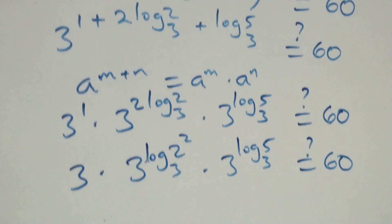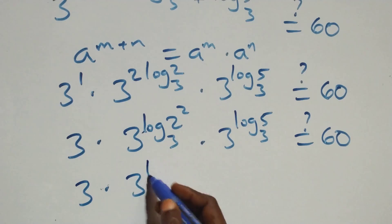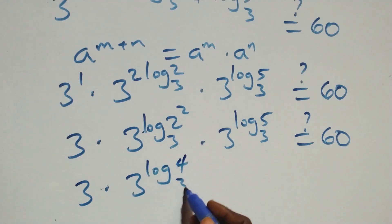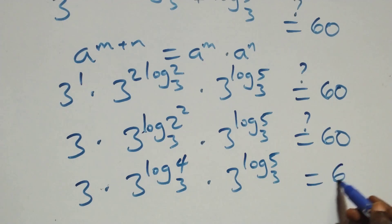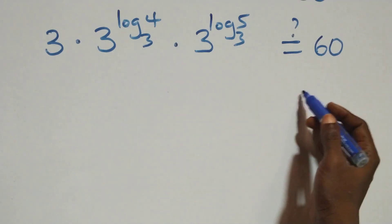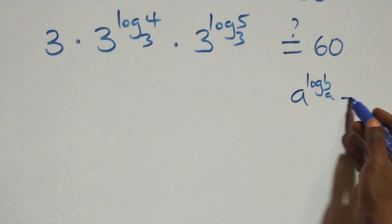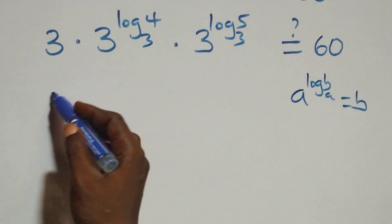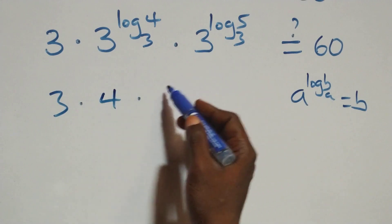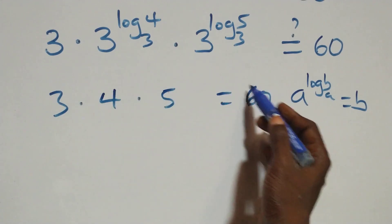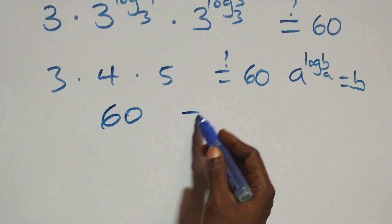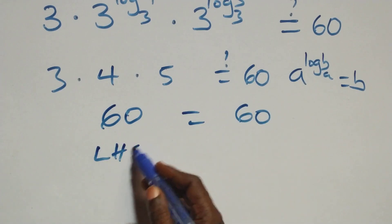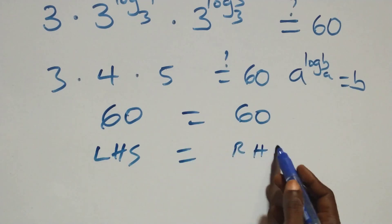This gives three times three raised to power log base three of four, times three raised to power log base three of five, which equals three times four times five, that is three times twenty, which equals sixty. This equals the right-hand side, confirming our answer.